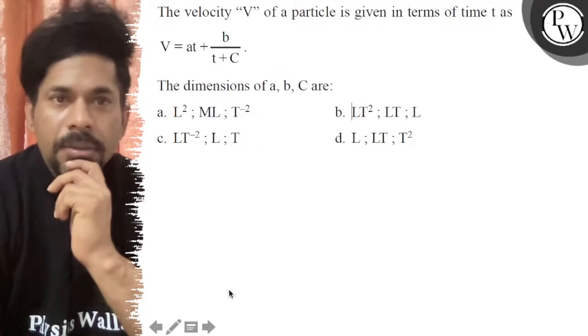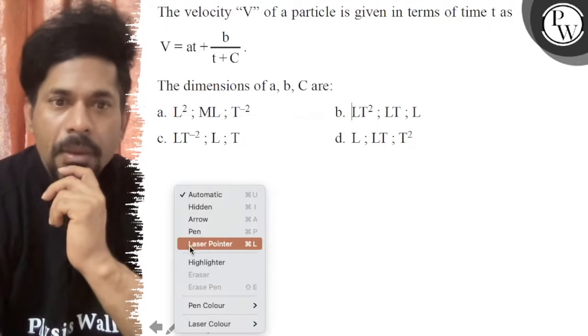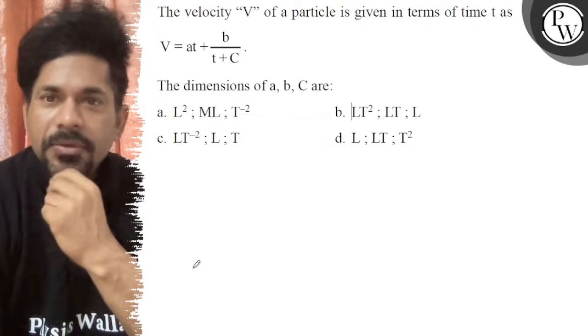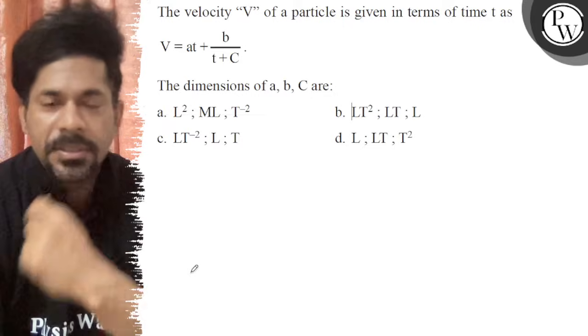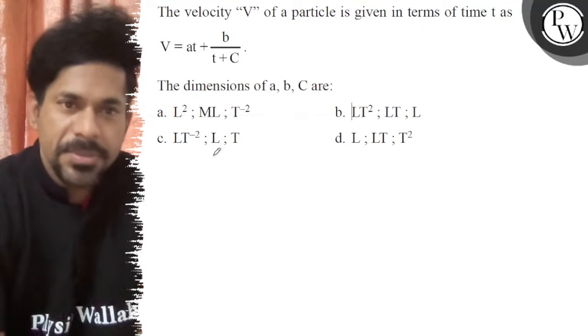Hello. The velocity V of a particle is given in terms of t as V = at + b/(t+C). The dimensions of a, b, c are the options.